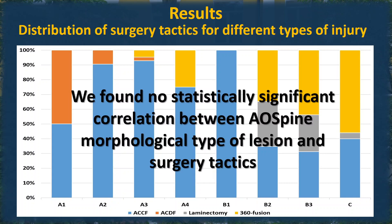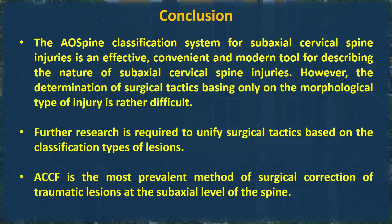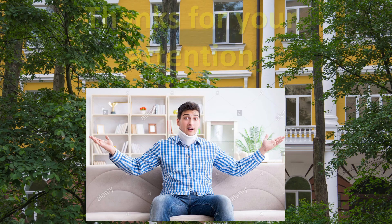We found no statistically significant correlation between the AO Spine morphological type of lesion and surgery tactics. In conclusion: the AO Spine classification for subaxial cervical spine injuries is an effective, convenient, and modern tool for describing the nature of subaxial cervical spine injuries. However, determination of surgical tactics based only on the morphological type of injury is rather difficult. Further research is required to unify surgical tactics based on classification type. ACCF is the most relevant method for surgical correction of traumatic lesions at subaxial cervical spine injury. No conflict of interest. Thank you for your attention.